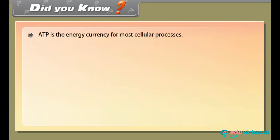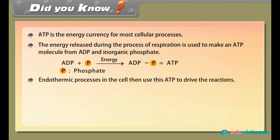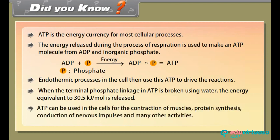ATP is the energy currency for most cellular processes. The energy released during respiration is used to make an ATP molecule from ADP and inorganic phosphate. Endothermic processes in the cell use this ATP to drive reactions. When the terminal phosphate linkage in ATP is broken using water, energy equivalent to 30.5 kJ per mole is released. ATP can be used for muscle contraction, protein synthesis, conduction of nervous impulses and many other activities.